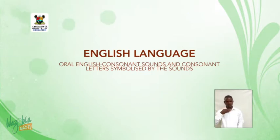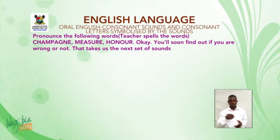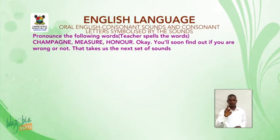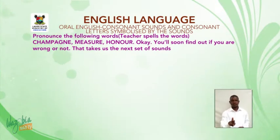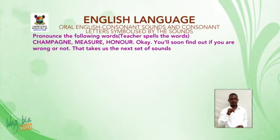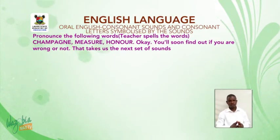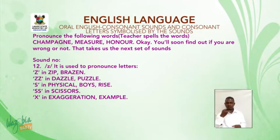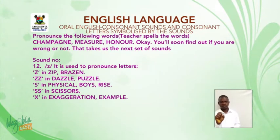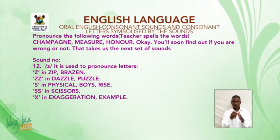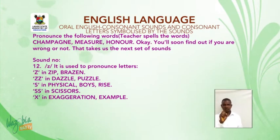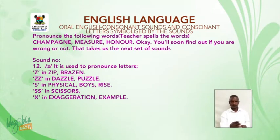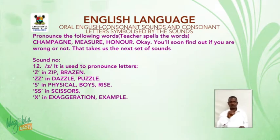I hope you enjoyed your break. Pronounce the following words: CHAMPAGNE, MEASURE, HONOUR. The correct pronunciations are: champagne, measure, honour. Sound number 12: /z/. It is used to pronounce letters Z in zip, brazen; ZZ in dazzle, puzzle; S in physical, boys, rise; SS in scissors; and X in exaggeration, example.